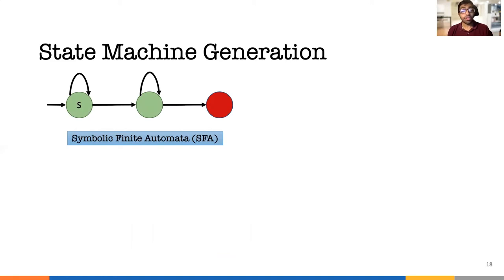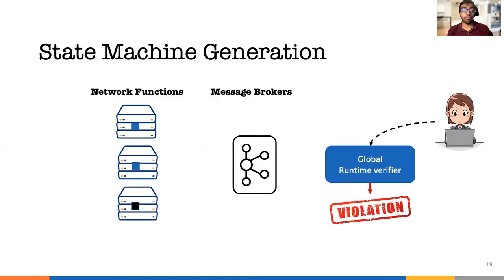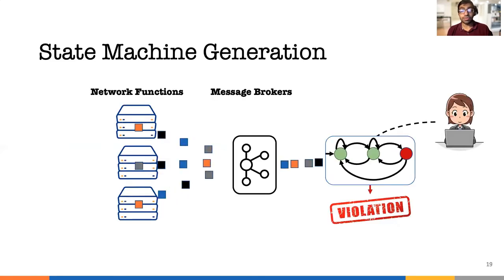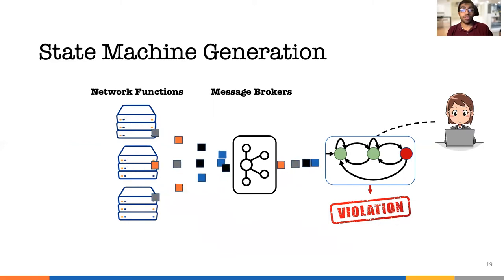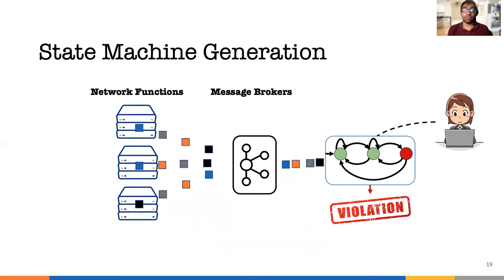Next, we determinize the SFA to form a DSFA, which is the deterministic SFA. The DSFA is what we use in our runtime verifier. The DSFA in principle is sufficient to catch bugs. The network function sends flow events to the state machine, which updates the state according to the events received. If it reaches the final state, it raises the violation.